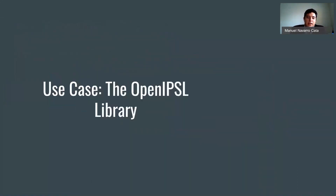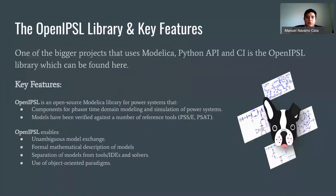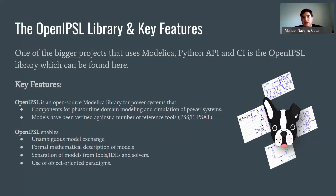Lastly, I want to talk about a library we are actually developing here at RPI, which is the OpenIPSL library. This is one of the bigger projects using Modelica, the Python API, and continuous integration. It's an open-source power systems library that we have verified against proprietary software that the power system industry uses. This really enables model exchange and provides a formal mathematical description of models, because many times companies don't disclose the actual elements of the models. It also separates the models from an IDE or a tool — with Modelica, you can pick and choose and pair with different applications to optimize your model.